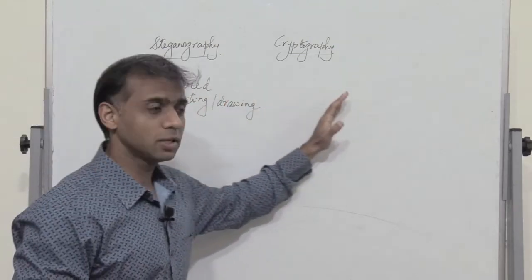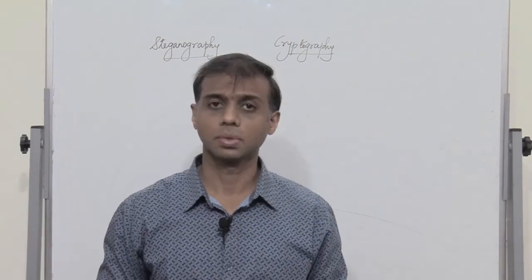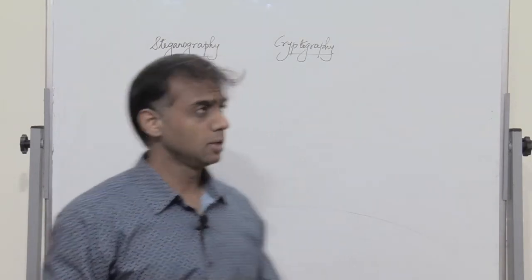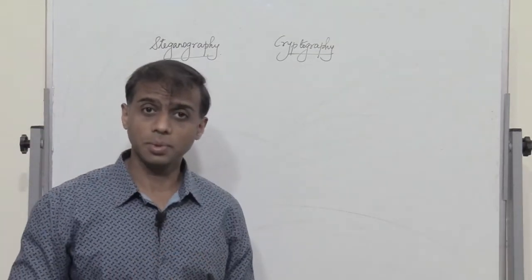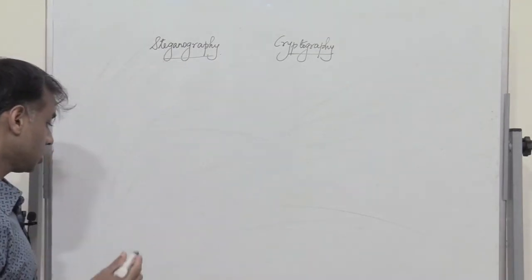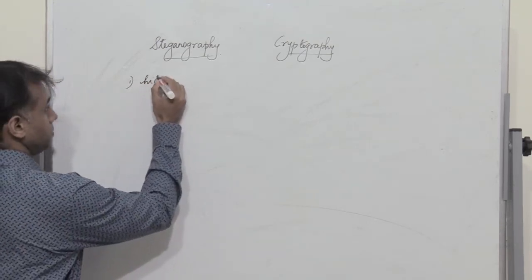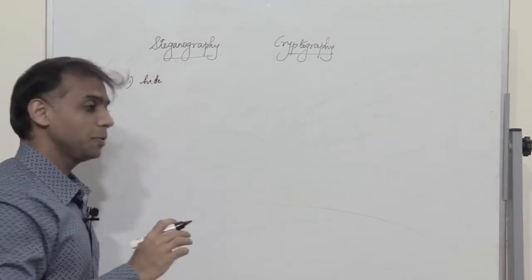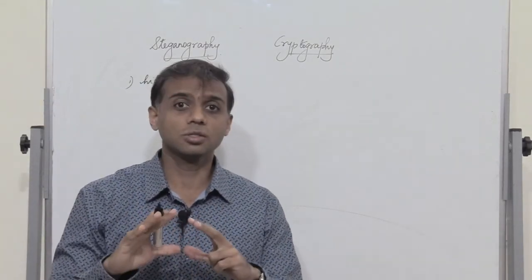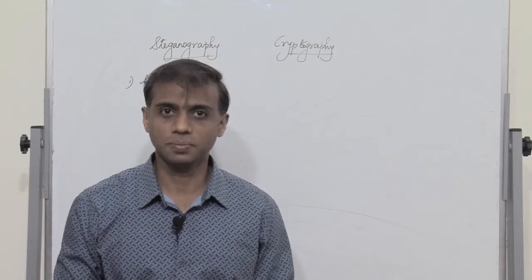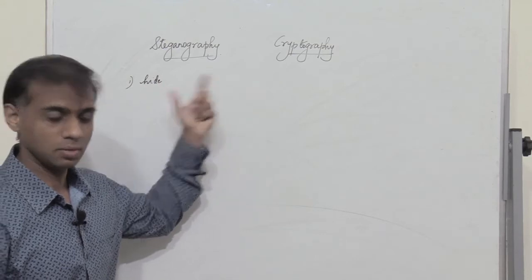Now let us observe the differences between steganography and cryptography. Steganography basically means hiding the information — the information is not revealed, it is hidden. However, the information does not change its nature; the information remains as it is but is only hidden.